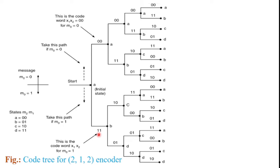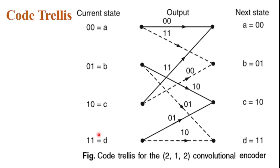The current state is 00 and the outputs are 00 and 11. The output 00 corresponds to message bit M0 is equal to 0, represented by the solid line, and the output 11 corresponds to message bit M0 is equal to 1, represented by the dashed line.